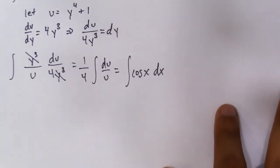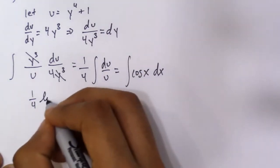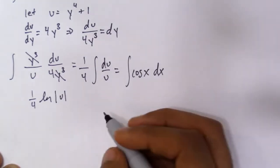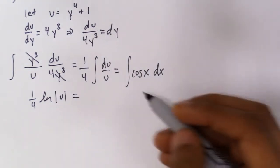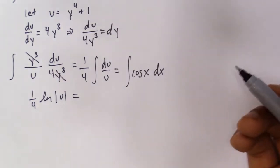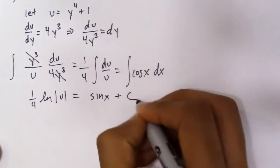So if we have that we can solve for the integral. It's just 1/4 ln|u|. The integral of cosine—the derivative of sine is cosine, so the integral of cosine must be sine. So sine x plus C.